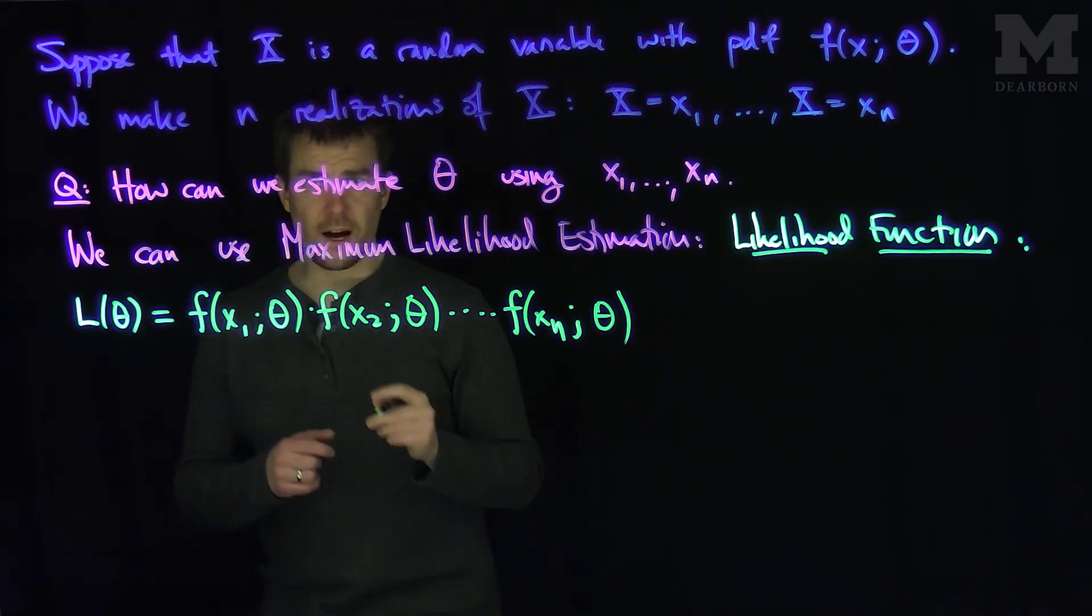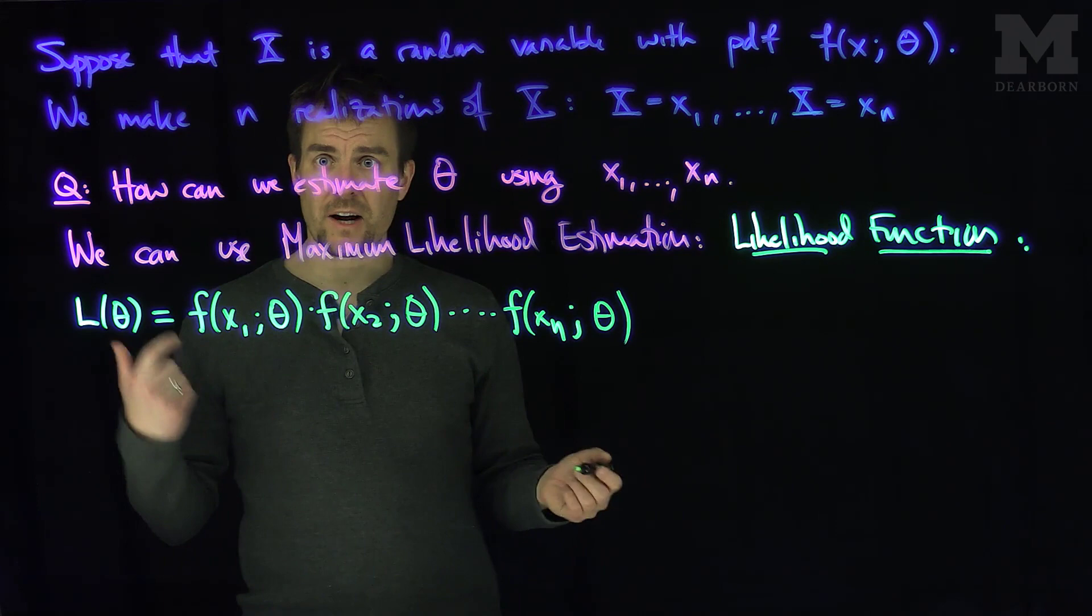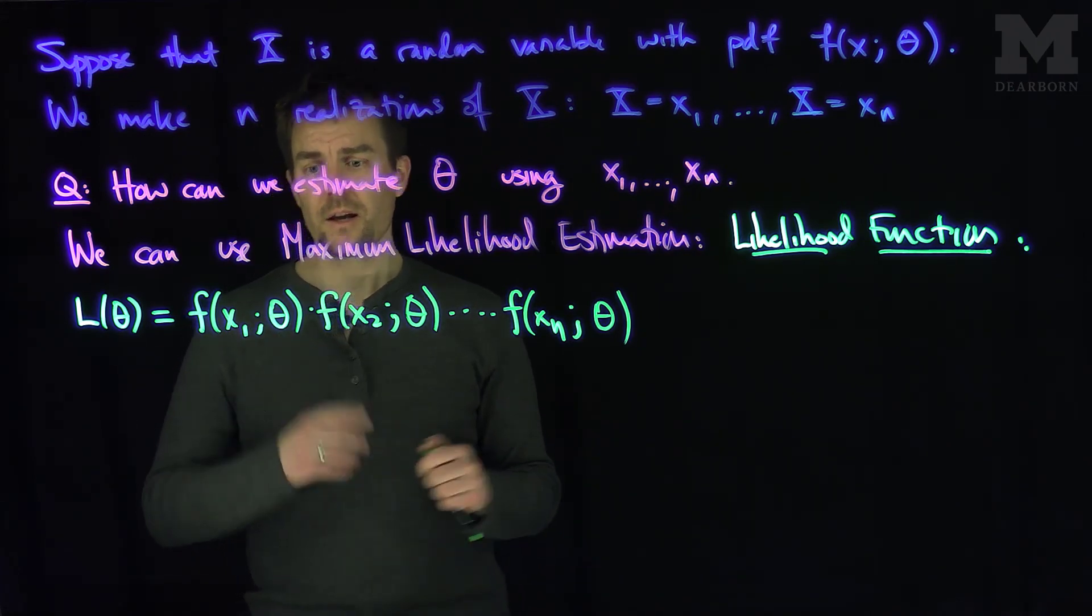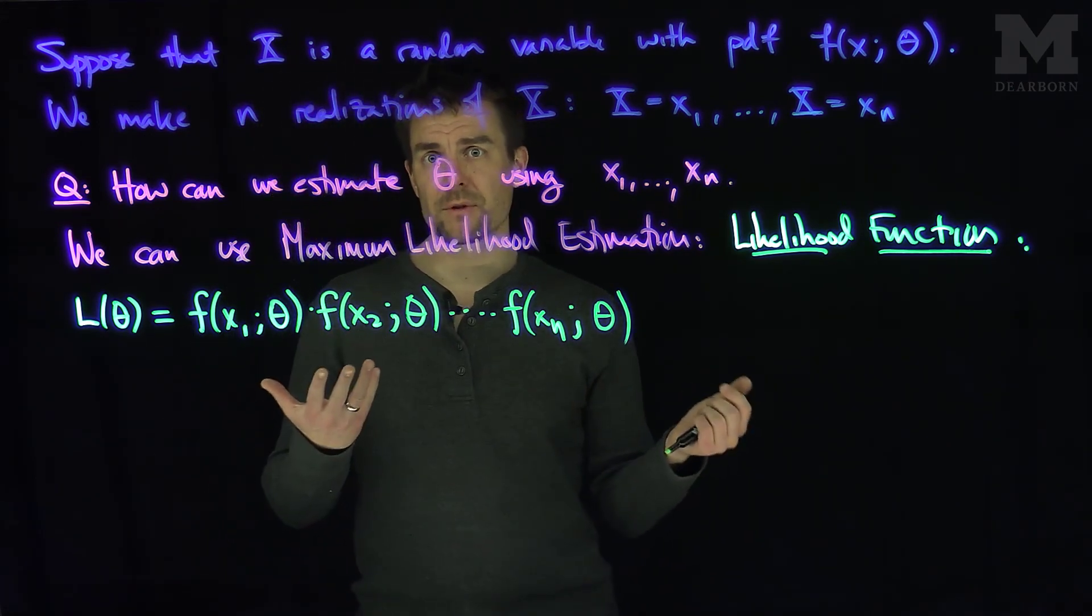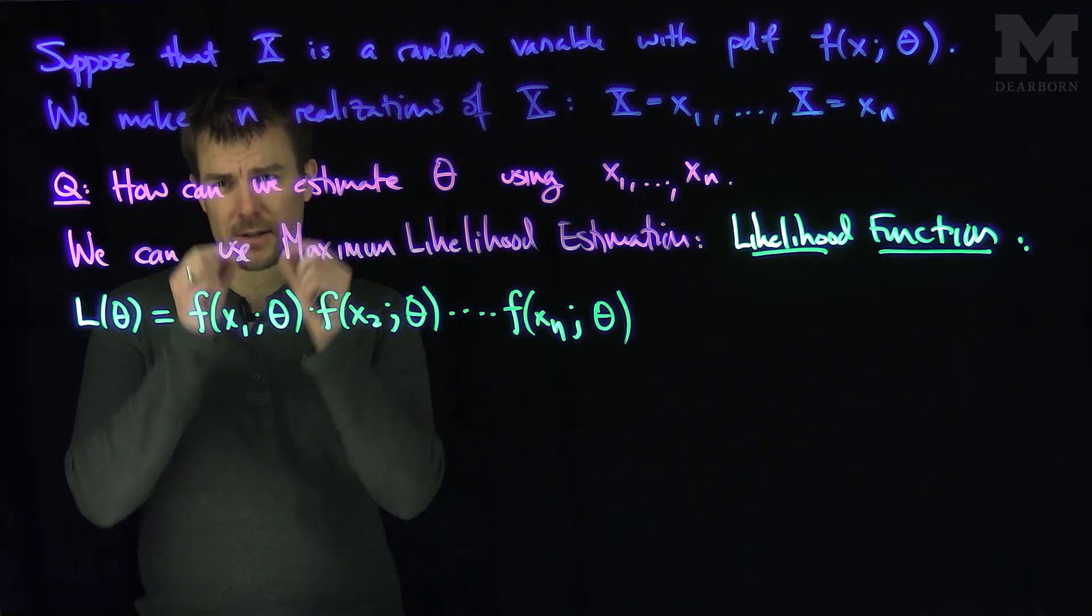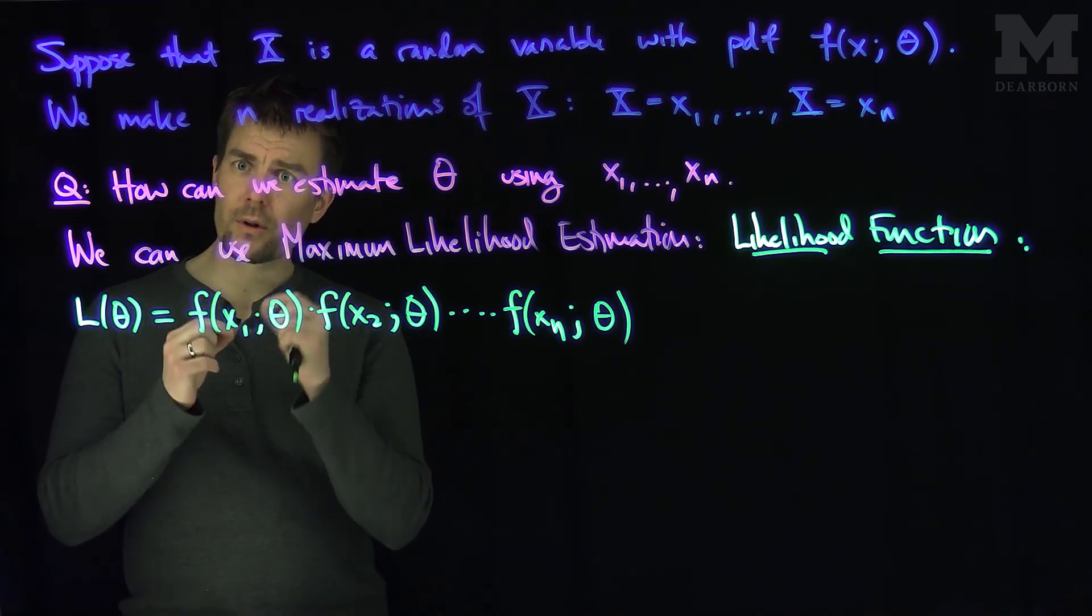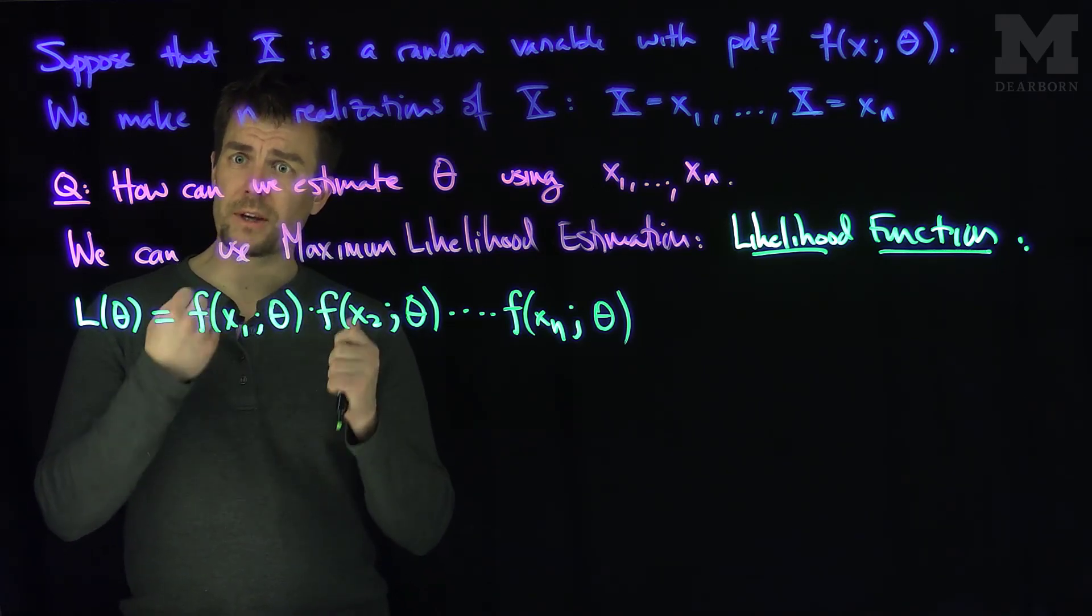I multiply the pdf at each of the realizations of the random variable, and I get this product of functions. This function is telling me how likely that theta is given those observations, because f(x1,θ) is essentially, up to a small scale, the localized probability that the random variable x will equal x1.